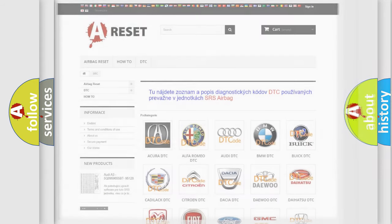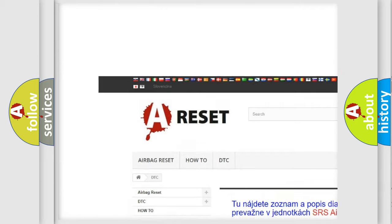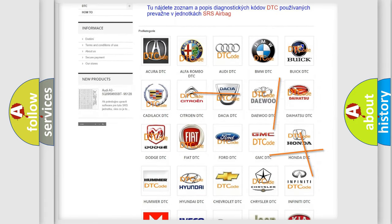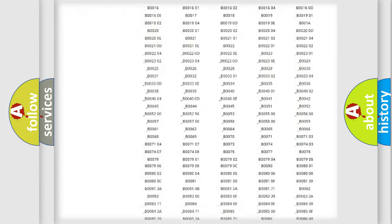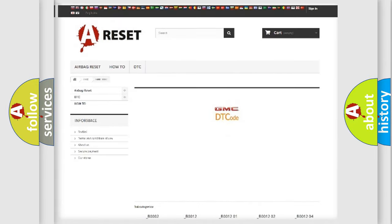Our website airbagreset.sk produces useful videos for you. You do not have to go through the OBD-II protocol anymore to know how to troubleshoot any car breakdown. You will find all the diagnostic codes that can be diagnosed in GMC vehicles.